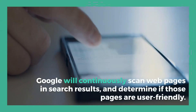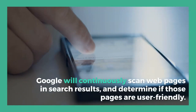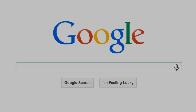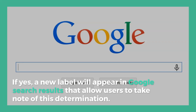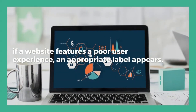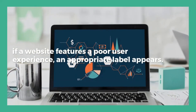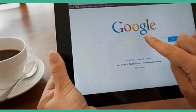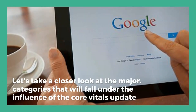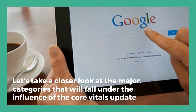Google will continuously scan web pages in search results and determine if those pages are user-friendly. If yes, a new label will appear in Google search results that allows users to take note of this determination. On the opposite side of the scale, if a website features a poor user experience, an appropriate label appears. Let's take a closer look at the major categories that will fall under the influence of the Core Vitals update.